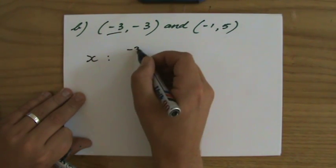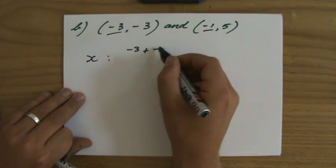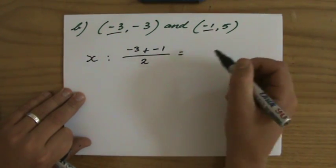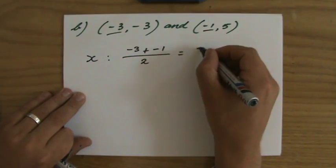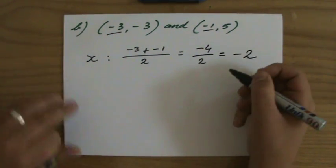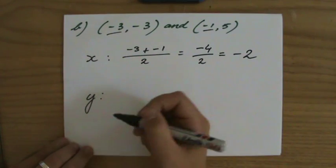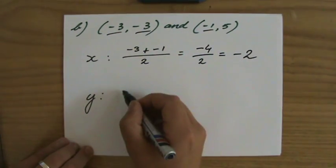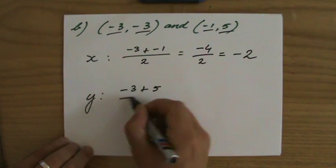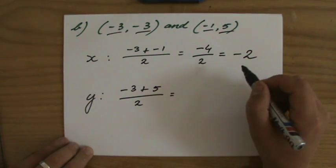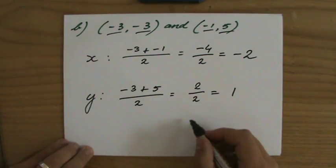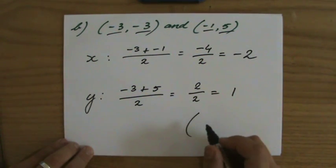(-3 + -1) divided by 2, and the x-coordinate of my midpoint, -3 plus -1 will be -4 divided by 2 which is -2. And the y-coordinate of my midpoint will be -3 plus 5 divided by 2, -3 plus 5 is 2 divided by 2 and that is 1.